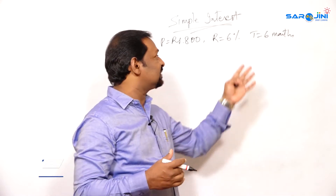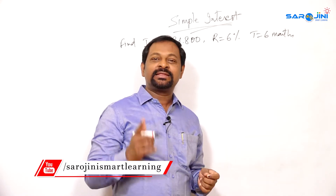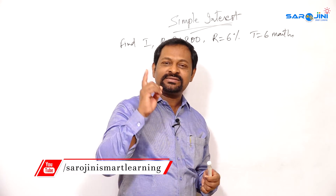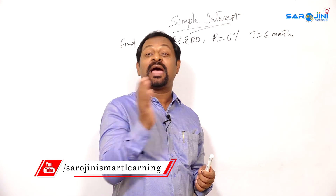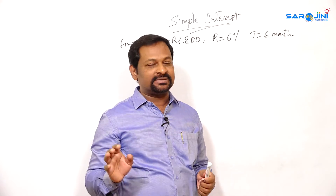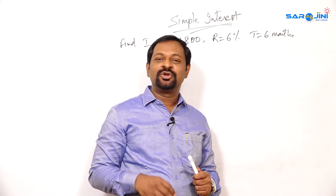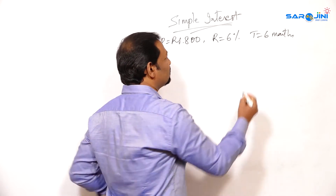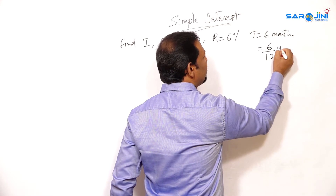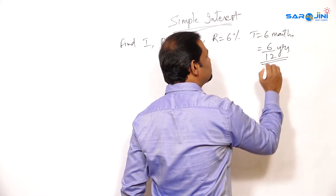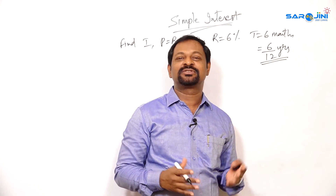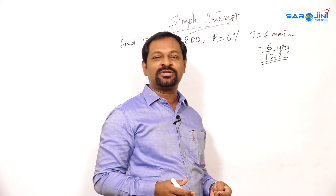What is the time period? After how many days are you going to return it? 6 months. As I told in the last episode, the time should always be in per annum — yearly only we should consider, not months. But the question is given in months, so how are you going to convert it into years? These 6 months can be written as 6 by 12 years. Why? Because how many months are there in a year? 12 months. So 6 by 12 we can write.